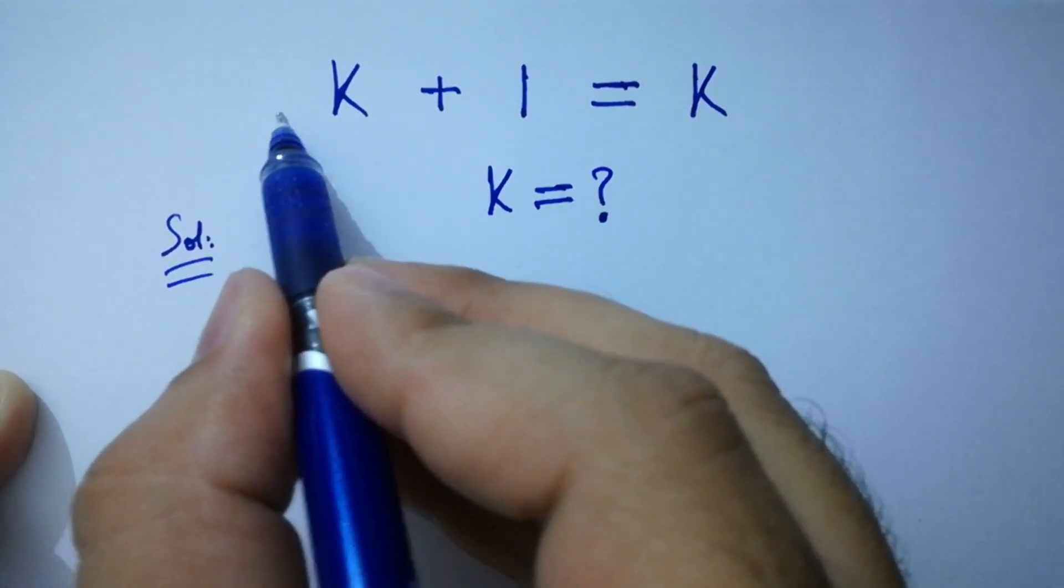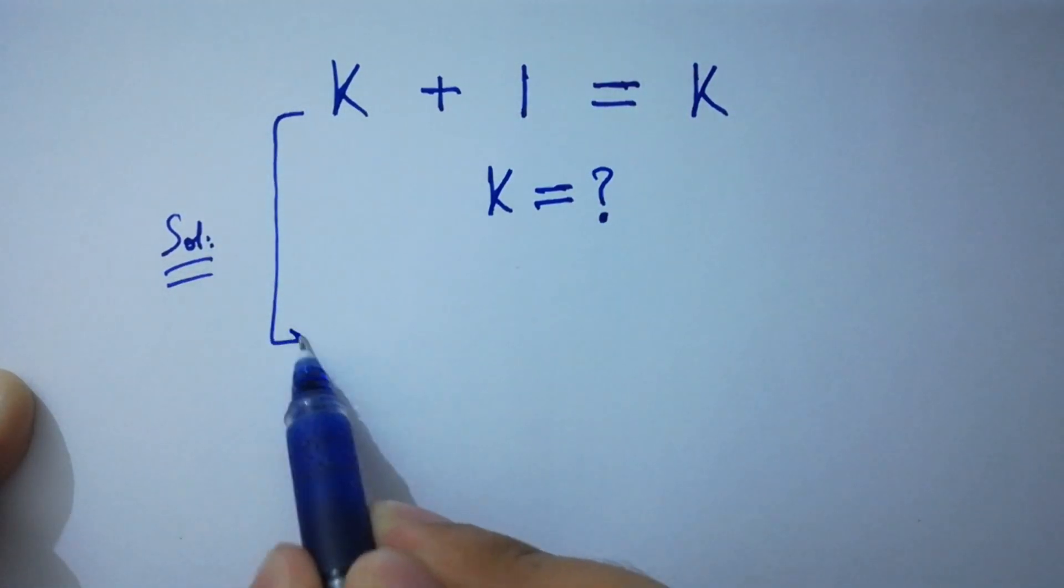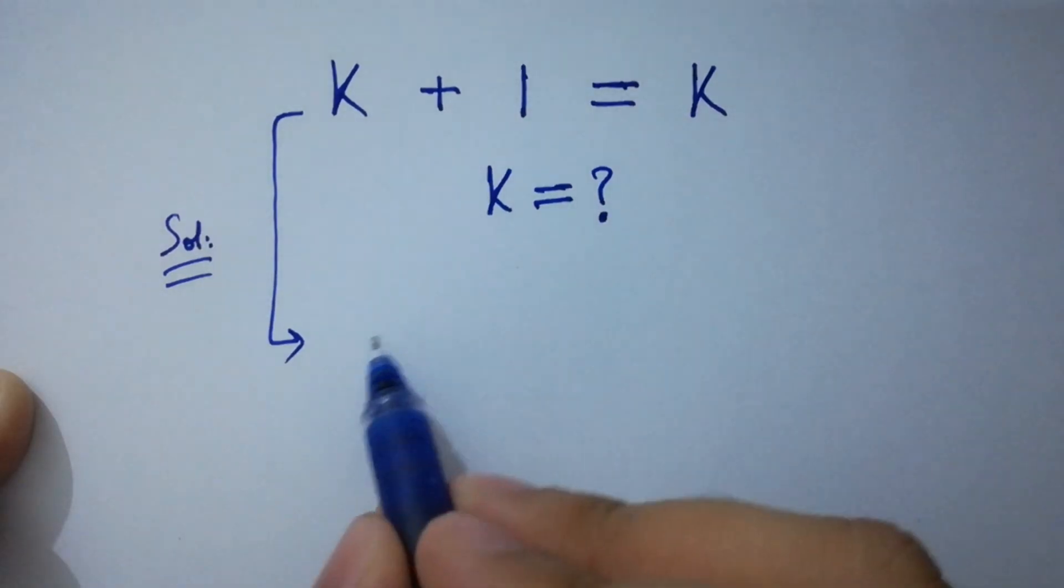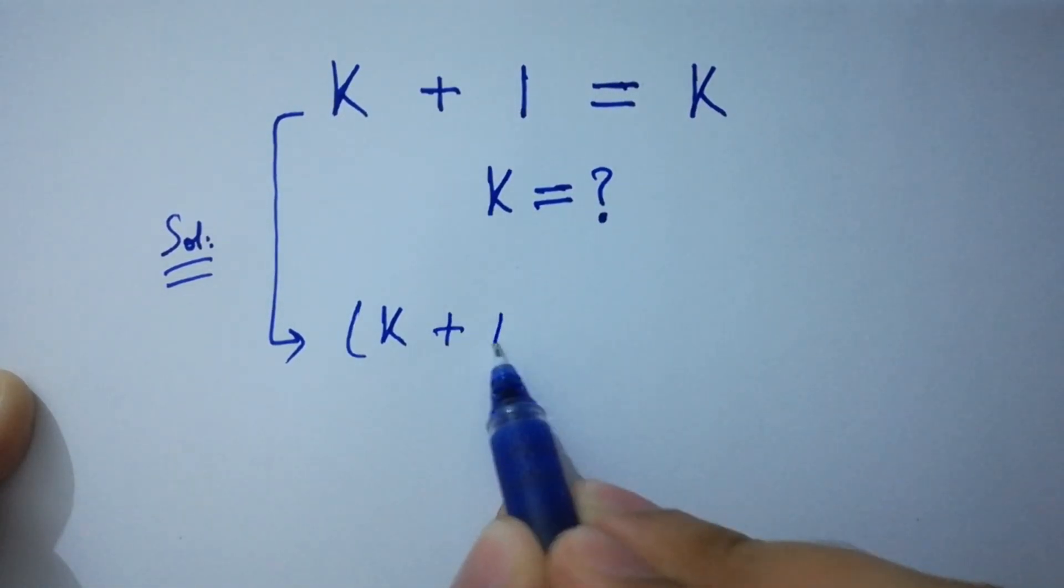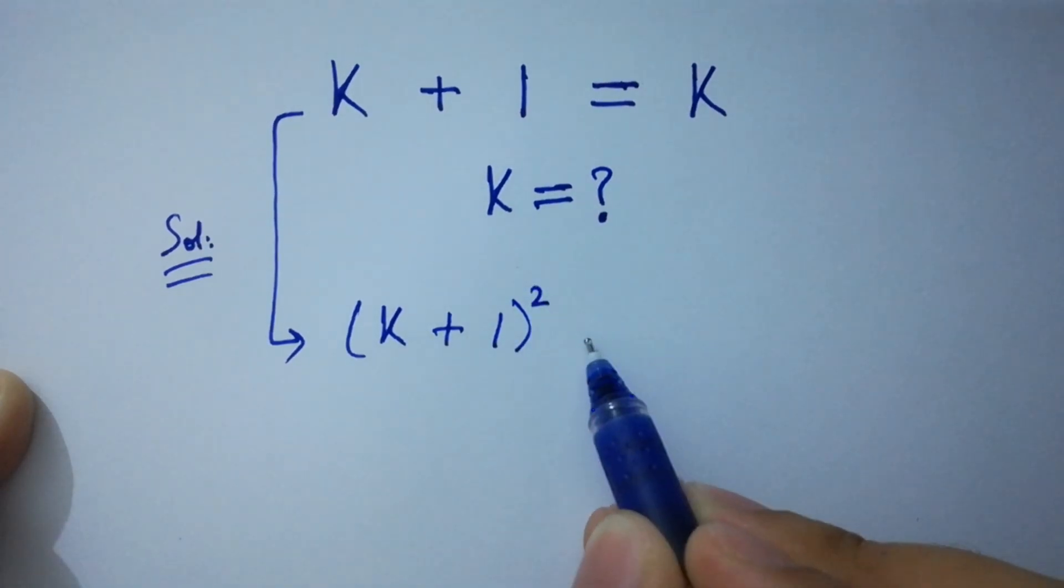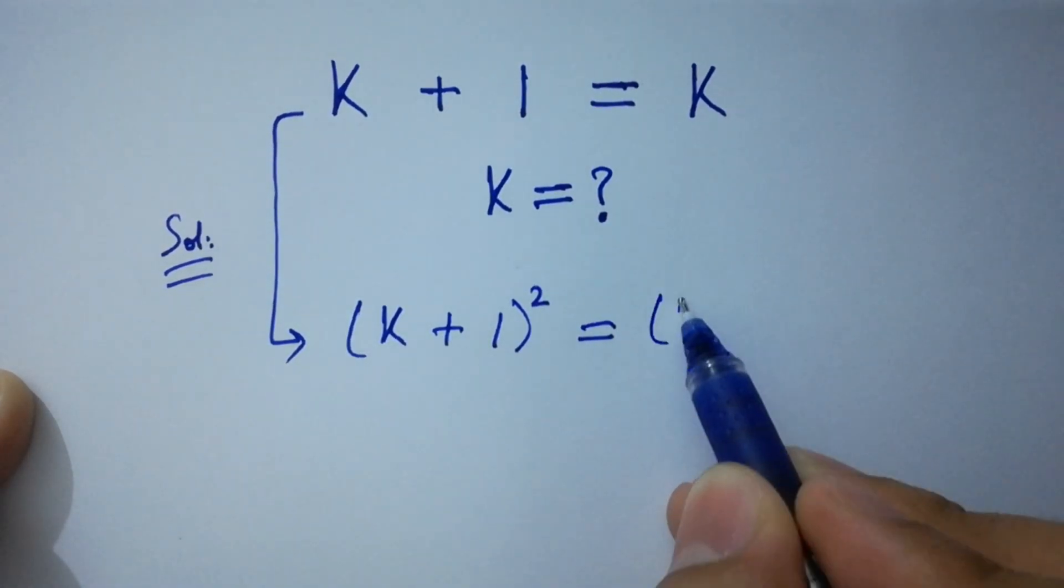To solve this, take square on both sides. k plus 1 square equal to k square.